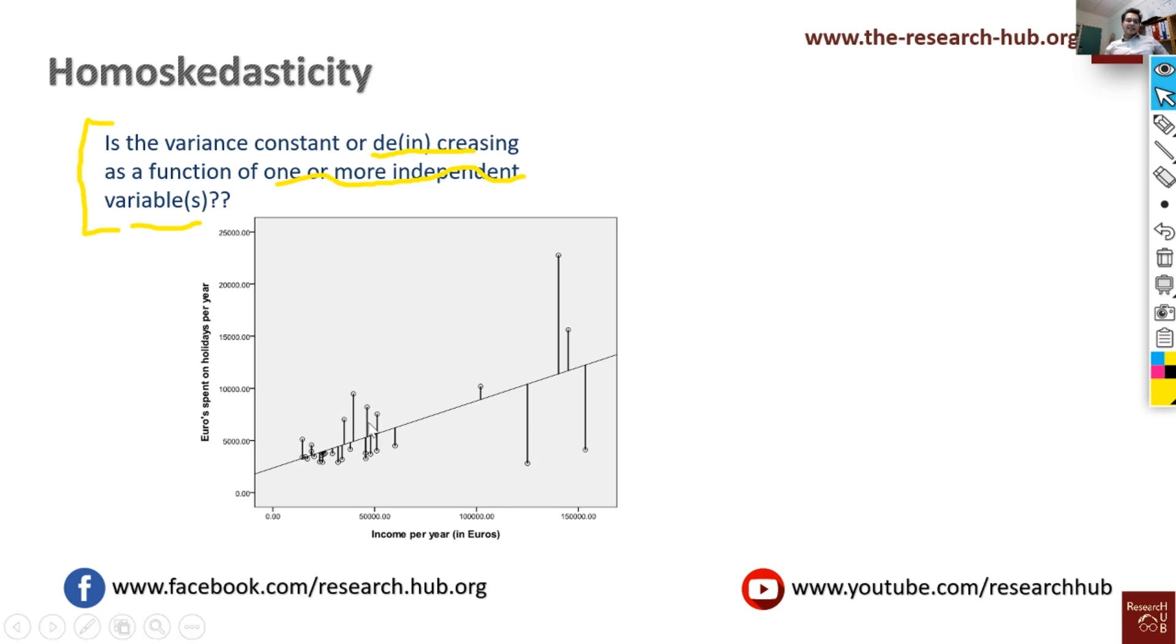Here you see these distances are called the errors. But here you see when the value of the independent variable is small the error is small, but when the value of the independent variable is increasing the errors are getting larger. So here actually we see there is a problem - the data here is heteroscedastic.